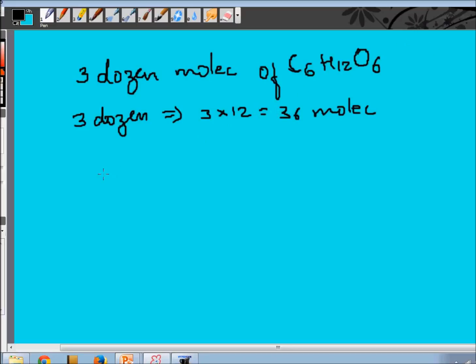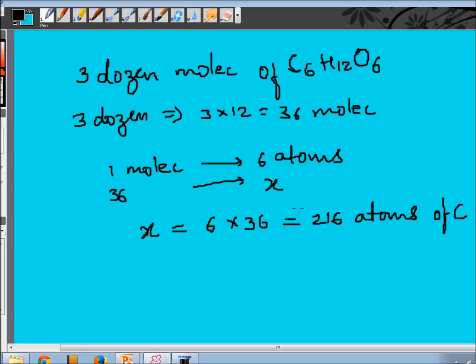Now if I have to calculate the number of carbon atoms, one molecule of glucose has six atoms of carbon. So thirty-six molecules will have, say, X atoms of carbon. What you do is you cross multiply. So X is equal to six into thirty-six. This is the number of carbon atoms which is present in three dozen molecules of glucose. So you have two hundred and sixteen atoms of carbon in three dozen molecules of glucose. Now you get the gist of this.